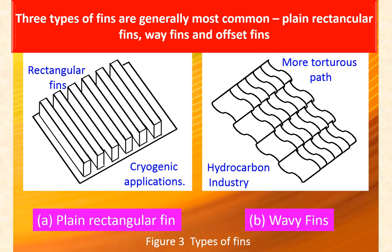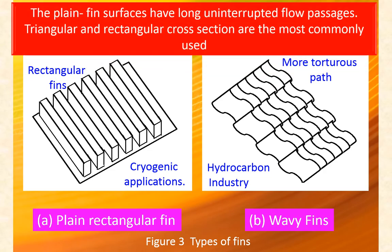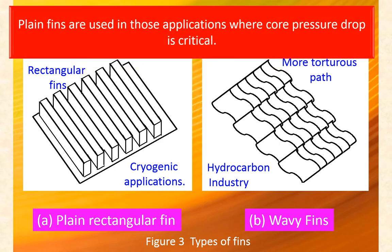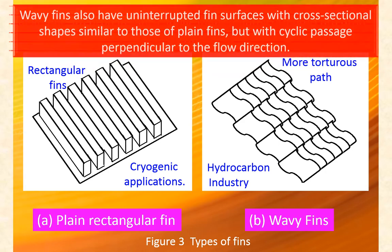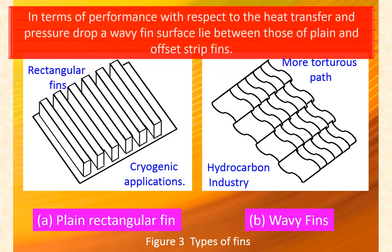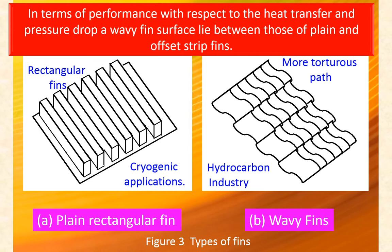Plain fin surfaces have long uninterrupted flow passages; triangular and rectangular cross-sections are the most commonly used. Plain fins are used in applications where core pressure drop is critical. Wavy fins also have uninterrupted fin surfaces with cross-section shapes similar to plain fins, but with a cyclical passage perpendicular to the flow direction. In terms of heat transfer and pressure drop performance, wavy fin surfaces lie between those of plain and offset strip fins.